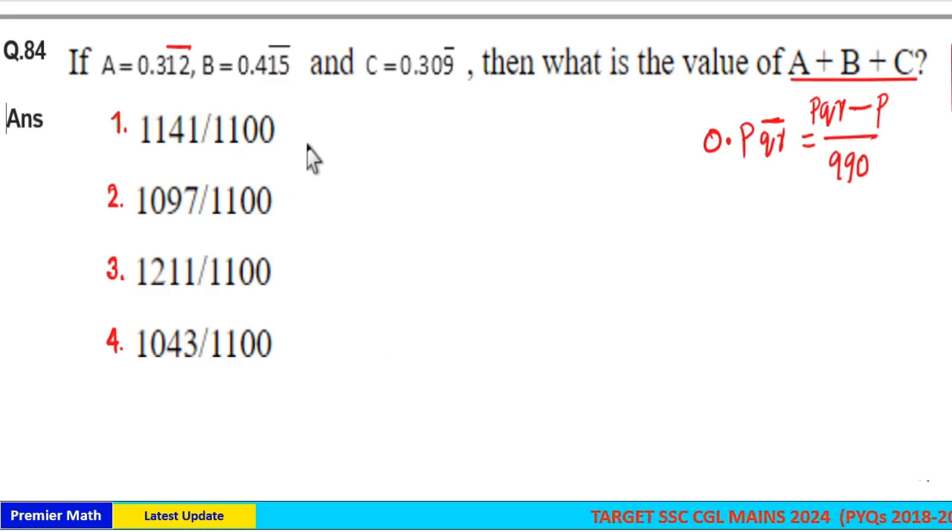Same way here A plus B plus C is equal to: Two numbers are repeating. Put double 9. One number not repeating. Put a 0. So 990 is the denominator. And here write 312 and subtract 3 from 312. 3 is not repeating. So subtract 3 from 312.